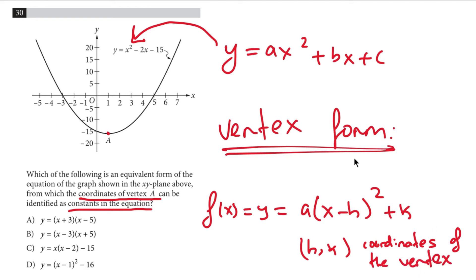So this is our vertex form. The coordinates of the vertex here are h, k which are 1, negative 16 because right here you see it corresponds to approximately negative 16 and the x coordinate of the vertex corresponds to 1.